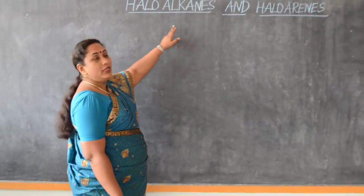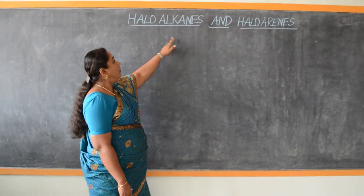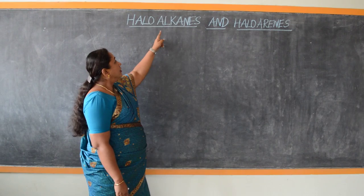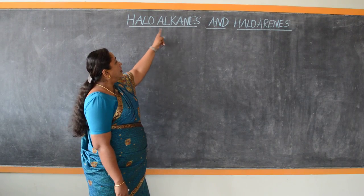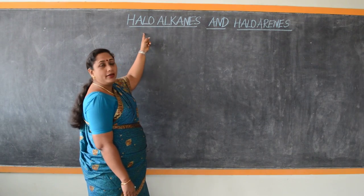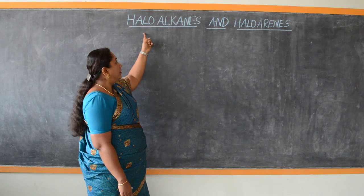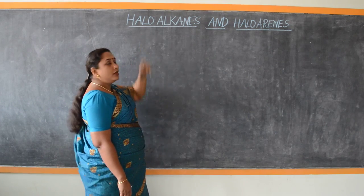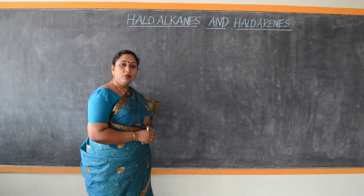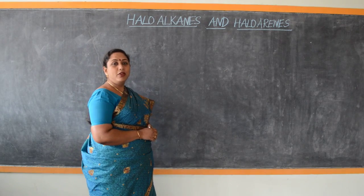The name itself indicates haloalkanes — these are alkanes which contain halogen atoms in them. What are halogens? Halogens are the Group 17 members of the periodic table.